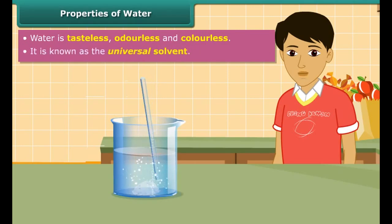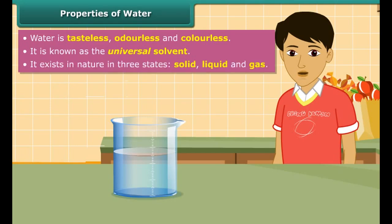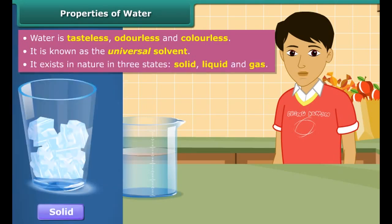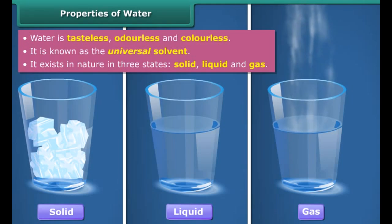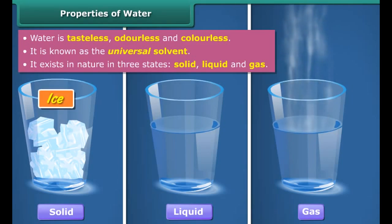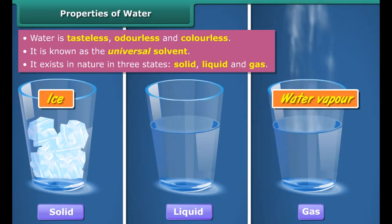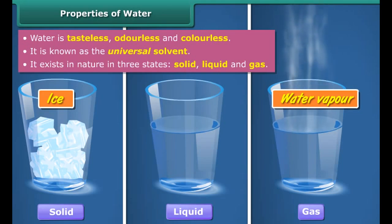Water is tasteless, odorless and colorless. It dissolves many substances, so it is known as the universal solvent. It exists in nature in three states: solid, liquid and gas. In solid form, water is known as ice or snow. In gaseous form, water is known as water vapor or steam. The most common form that water takes is the liquid form.